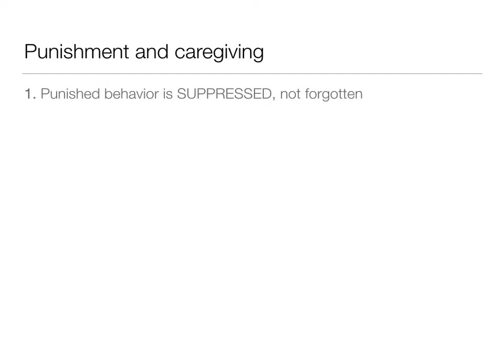Punished behavior is actually just suppressed, not forgotten — it doesn't mean they won't behave that way again. Reinforcement works a lot better because it tells you how you should behave instead of just saying how you shouldn't. Punishment really just teaches discrimination among situations. A kid punished for saying a bad word in front of parents, but rewarded by friends on the playground for the same word, just learns not to say those words in front of parents — they discriminate between those situations.